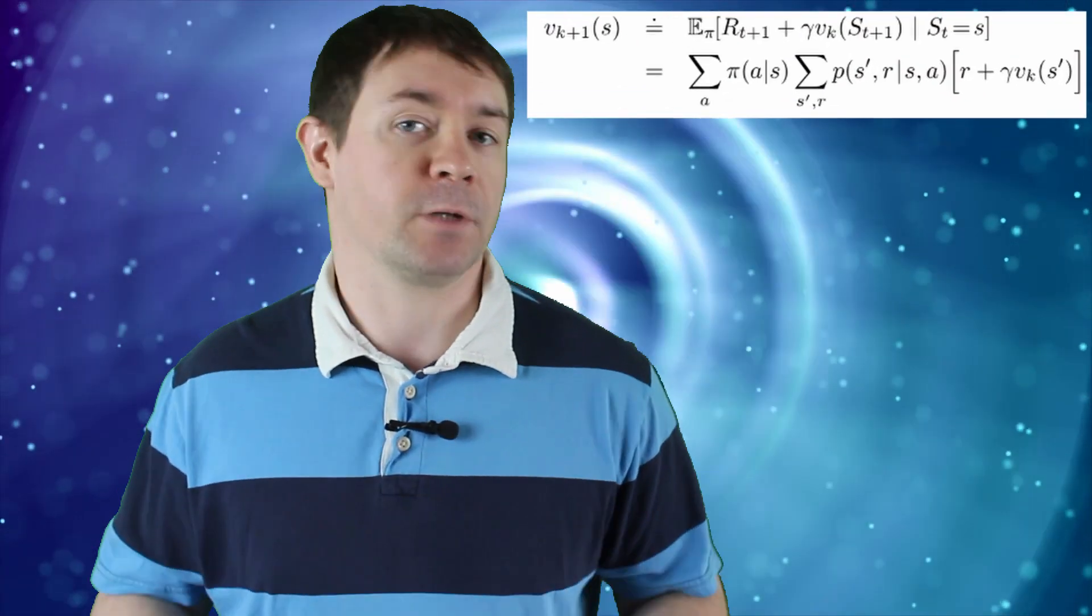Since we know the environment dynamics, the Bellman equation is really a system of equations with the size of the set being equal to the number of states in the environment. There's one unknown for each state which is the value of the Bellman equation itself. So we have n equations with n unknowns which is a solvable problem.